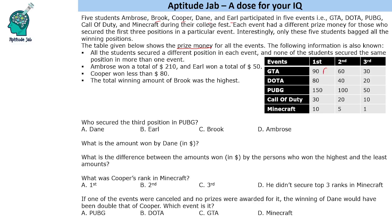None of the students secured the same position in more than one event. So suppose person A came first in one event — A cannot be first in any other event. A has to be second or third in another event. Ambrose won a total of $210 and Earl won a total of $50. Cooper won less than $80 and the total winning amount of Brook was the highest. Using this, we need to find how much each person won and answer questions about positions.